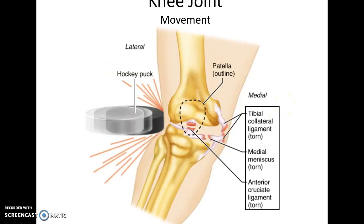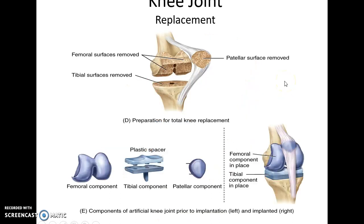Sometimes a person suffers an injury to the lateral side of the knee, leading to damage to the medial meniscus, the anterior cruciate ligament, and the tibial collateral ligament — a serious injury requiring surgery. People who have worn down their knee joints can also get knee replacements, which involves shaving down the femur, tibia, and patella and putting metal or plastic structures onto those bones, then repositioning them so the knee works properly without pain.